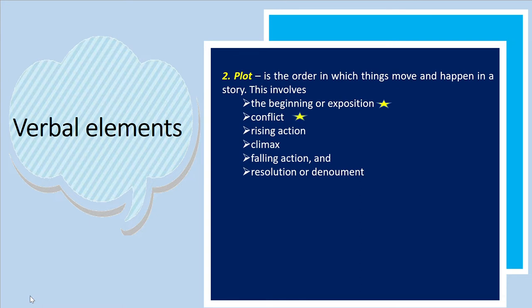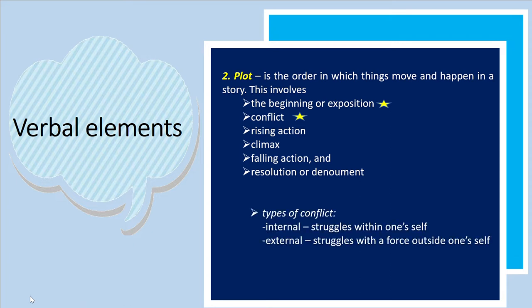The conflict is an essential part of the plot that shows the opposition tying incidents together and moving the plot. Not merely limited to arguments, conflict can be any form of struggle the main character faces. There are two types of conflict: internal and external. The internal is the struggle within one's self — physical limitations, choices, etc. The external is the struggle with forces outside oneself: character versus character, character versus nature, and character versus society.